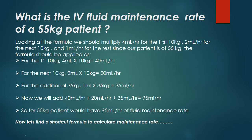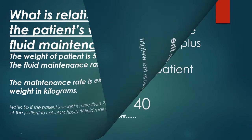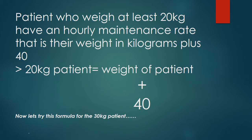Now let's find a shortcut formula to calculate maintenance rate. What is the relationship between the patient's weight and their fluid maintenance rate? The weight of the patient is 55 kilograms and the fluid maintenance rate is 95 milliliters per hour. The maintenance rate is exactly 40% higher than the weight in kilograms. So if the patient's weight is more than 20 kilograms, we can just add 40 to the weight of the patient to calculate the hourly intravenous fluid maintenance rate.